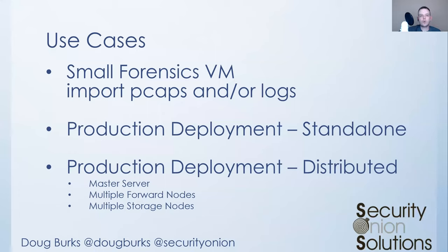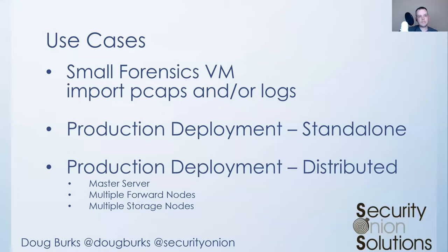Once you've started with SO-import-pcap and gotten your feet wet with Security Onion, you might be ready to stand it up in production. You might start with just a standalone deployment — all the components running on one box — which might be okay for a home network, a lab network, or a small organization monitoring one network segment. But if you're really trying to do an enterprise deployment, you want a distributed deployment: a master server with multiple forward nodes, each running Zeek, Snort or Suricata, doing full packet capture, shipping Zeek logs and IDS alerts to the master server and distributed across multiple storage nodes — building scalable architectures that can grow as your visibility needs grow.